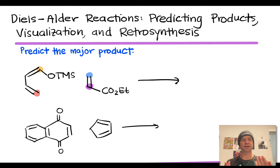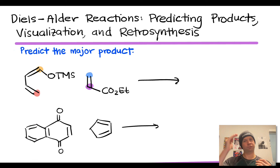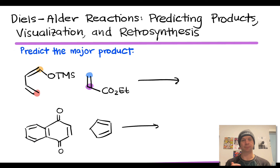There are two possible ways to connect these reactants in a 4+2 cycloaddition. We could connect them as drawn — with the ester group in the bottom right and the OTMS group at the top — or we could flip the dienophile so that the ester group ends up on a carbon adjacent to the carbon bearing the OTMS group. To decide the regiochemistry, we need to consider resonance forms of the diene and dienophile and where positive and negative charges appear.